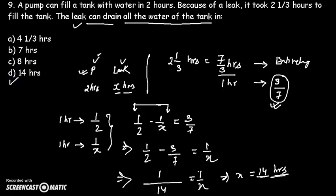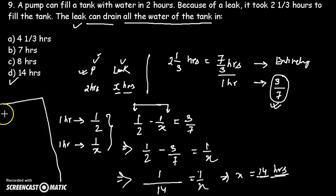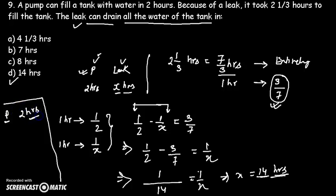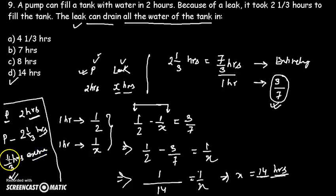There is another method you can use. Suppose there is no leak at all. The pump can fill the tank completely in 2 hours. Now if there is no leakage and the pump works for 2⅓ hours, that means it is working for 1/3 hours extra.